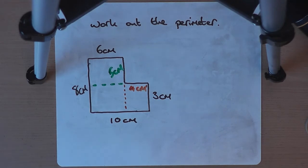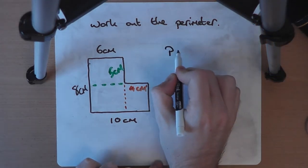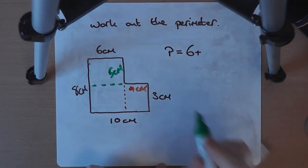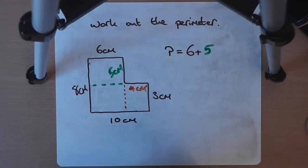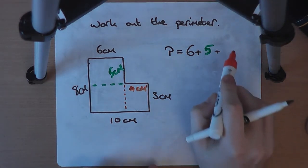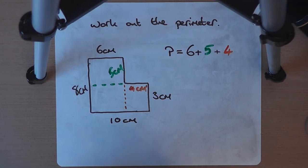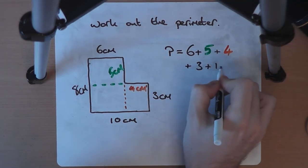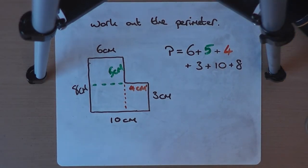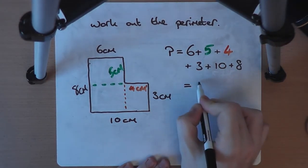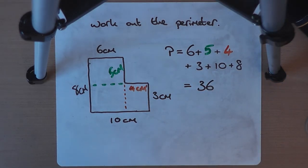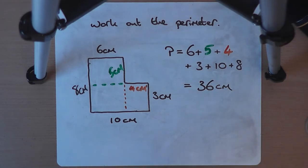Which means then, our perimeter, we have to be doing the 6 added to the 5 that we've just found, added to the 4 that we've just found, added to the 3, and the 10, and the 8. And when we total those up, 36. So our perimeter is 36. It needs some units. 36 what. We're working in centimeters all the way through. So 36 centimeters.